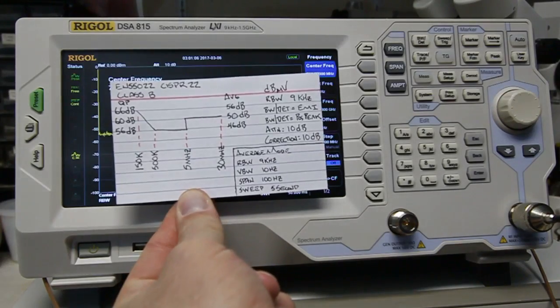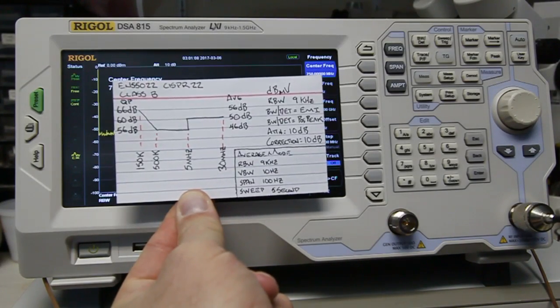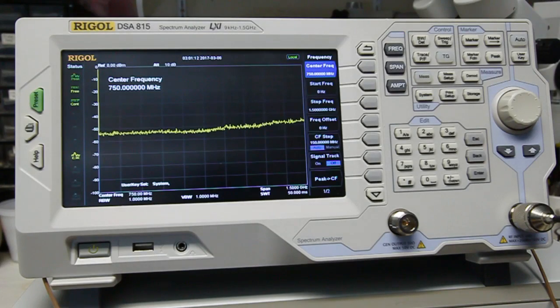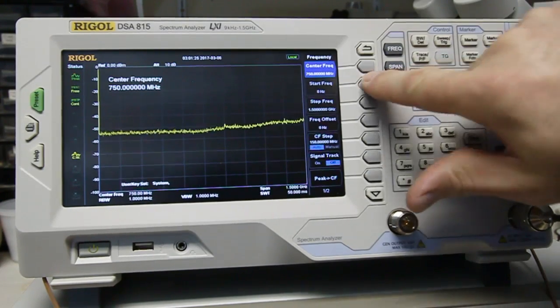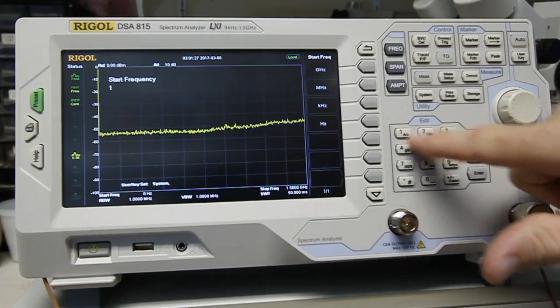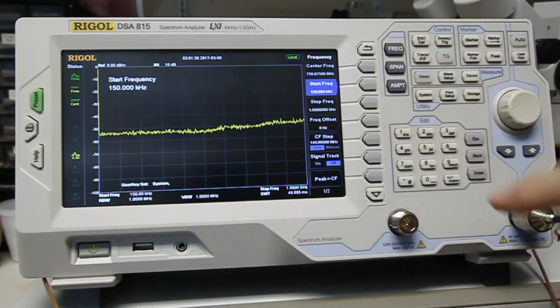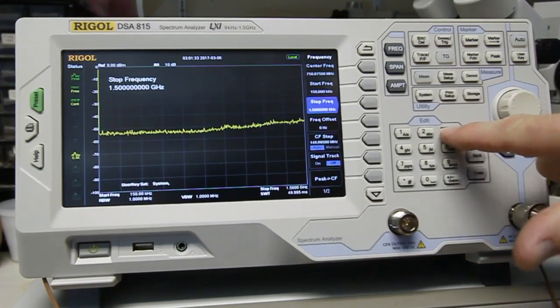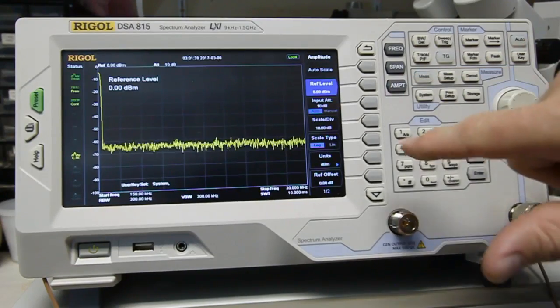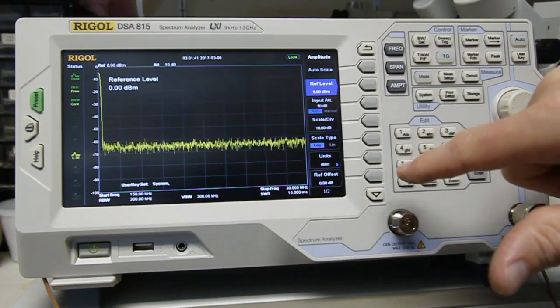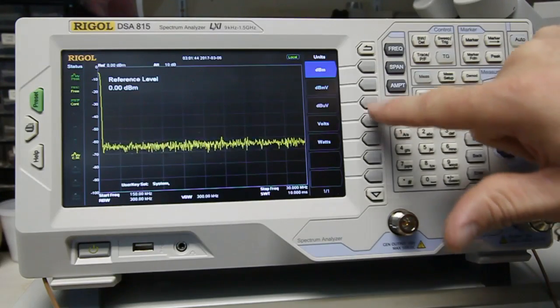Here's my little handy-dandy cheat sheet that I use. So the first thing that we're going to do is I'm going to set up the frequency bounds and what type of units we're going to use. The specification says that we start at 150 kilohertz and our stop frequency is 30 megahertz. Our amplitude is in dB microvolts.